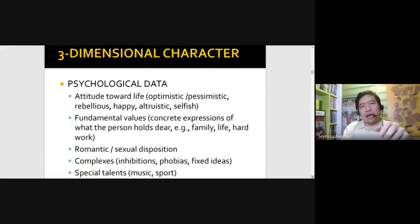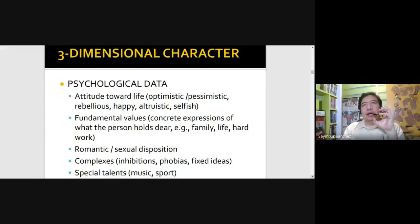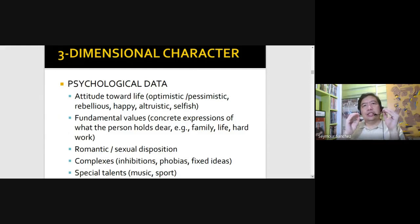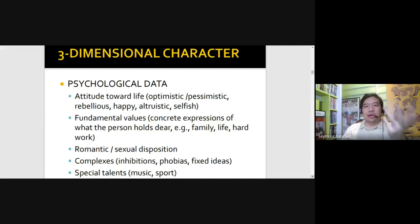We'll also have attitude toward life — your character might be optimistic, pessimistic, rebellious, happy, altruistic, or even selfish. And then we have fundamental values. What does your character hold dear in the story? Is it the family? For example, in OTJ, although you have characters who are assassins — played by Joel Torre and Gerald Anderson — by showing their family life, we got to sympathize with them although they're killers.